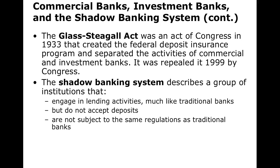We had the Great Depression in the 1930s. Part of that was banks going crazy with loans, and debt in the stock market was being ramped up very quickly because of all the margin debt. We had a very severe contraction in the economy. Because of this, the Glass-Steagall Act was enacted in Congress in 1933. It created a federal deposit insurance program and separated the activities of commercial and investment banks, saying commercial banks need to be safer.